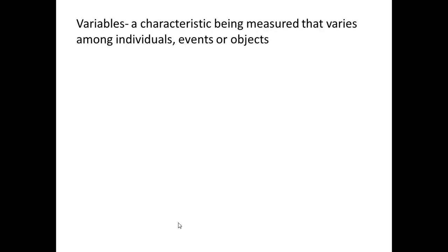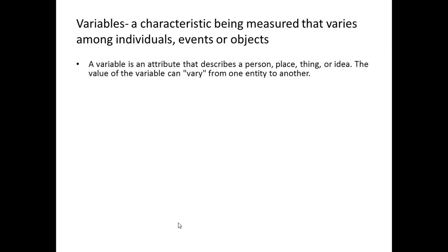A variable is defined as a characteristic being measured that varies among individuals, events, or objects. A variable is an attribute that can describe a person, place, thing, or idea. The value of the variable can vary from one person or observation to another.